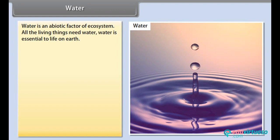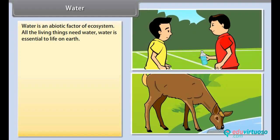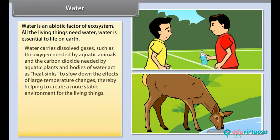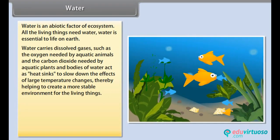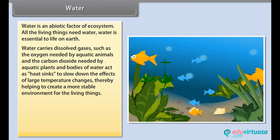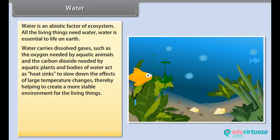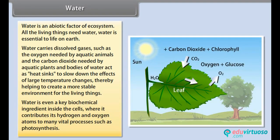Water: Water is an abiotic factor of the ecosystem. All living things need water; water is essential to life on earth. Water carries dissolved gases such as the oxygen needed by aquatic animals and the carbon dioxide needed by aquatic plants. Bodies of water act as heat sinks to slow down the effects of large temperature changes, thereby helping to create a more stable environment for living things. Water is also a key biochemical ingredient inside cells, where it contributes its hydrogen and oxygen atoms to many vital processes such as photosynthesis.